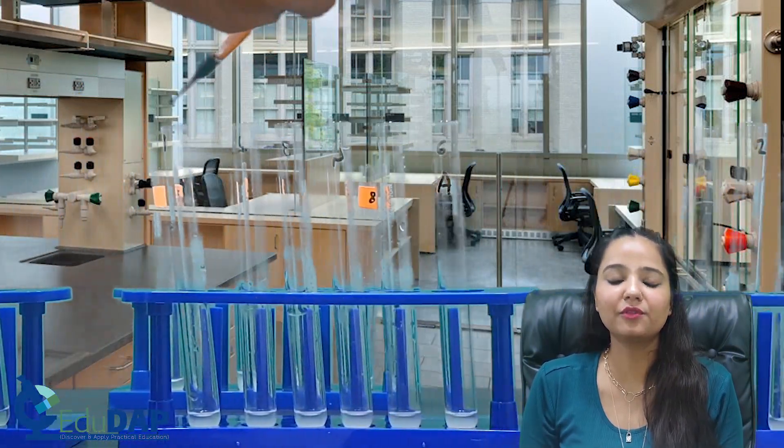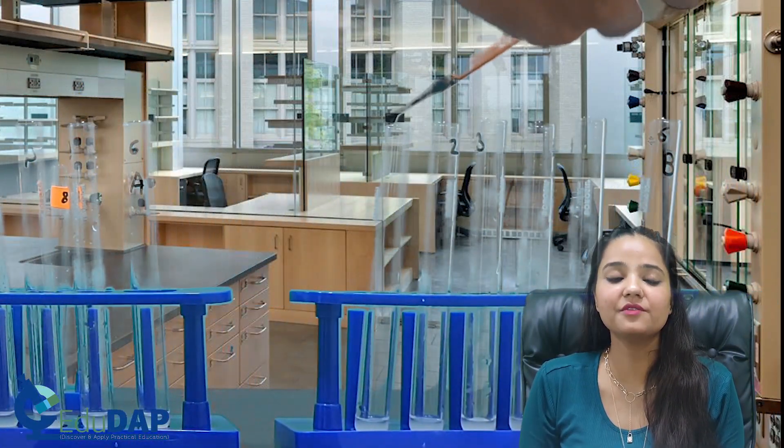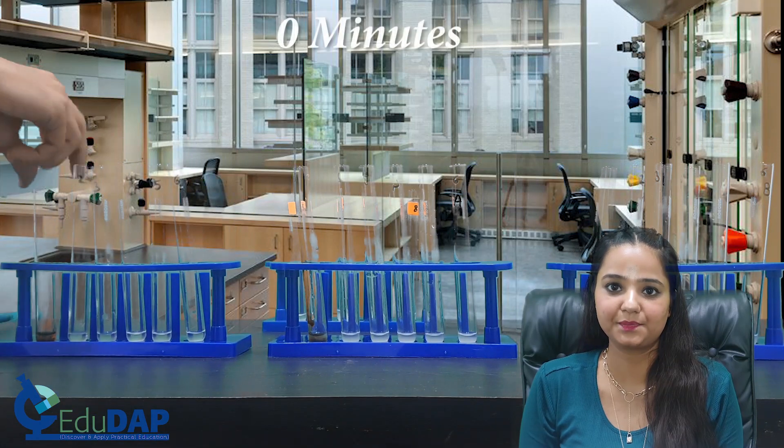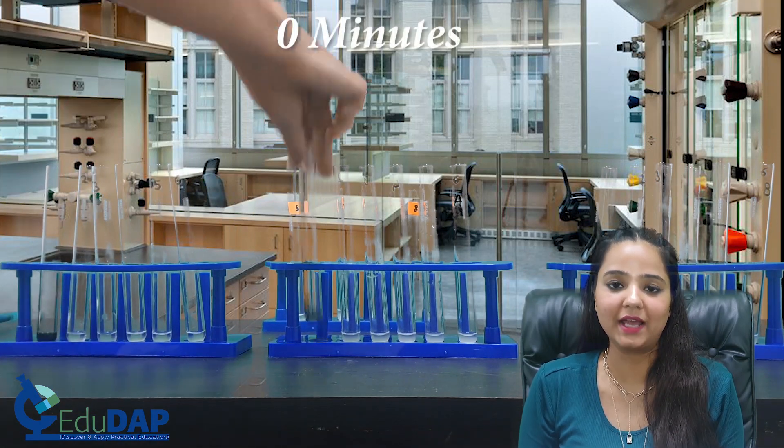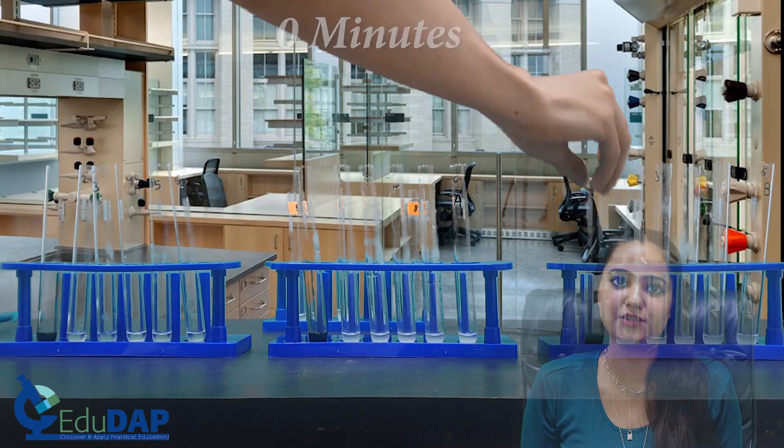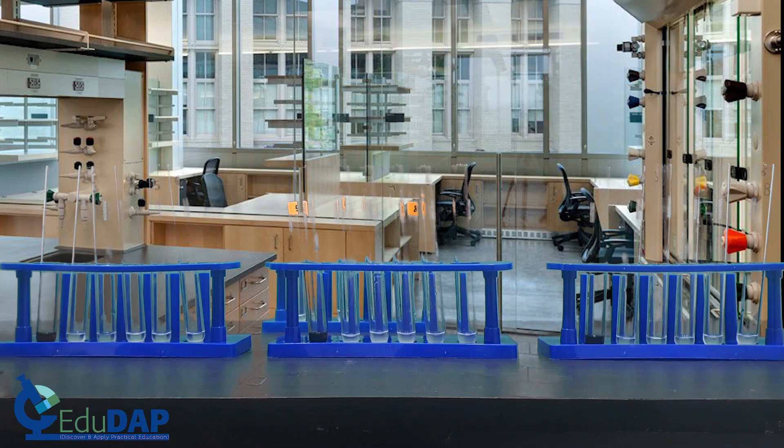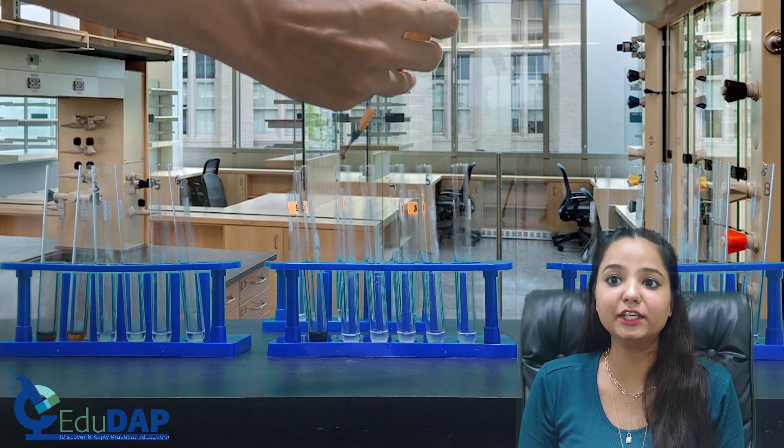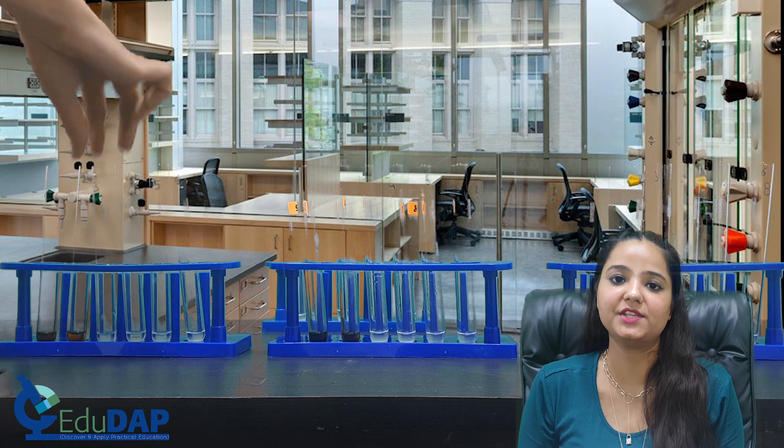Add a few drops of iodine to the first tube of each series and observe the result at 0 minutes. The sample turns blue-black, indicating the presence of starch. Repeat the step at intervals of 2 minutes and observe the change in color.